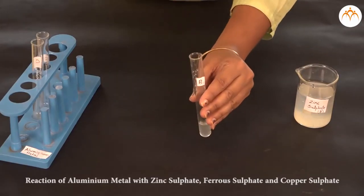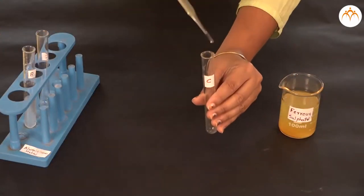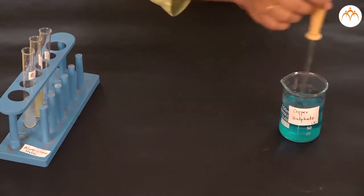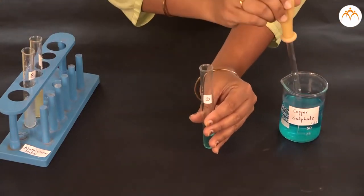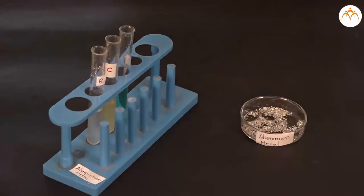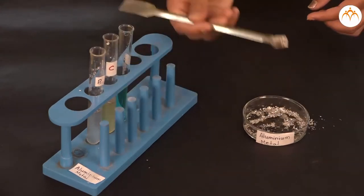Part A. Let us first perform the reactions for the metal aluminum. As aluminum metal cannot react with its own salt, we are going to take other three salt solutions in test tubes. Add aluminum metal to all the three test tubes. Observe the reactions.